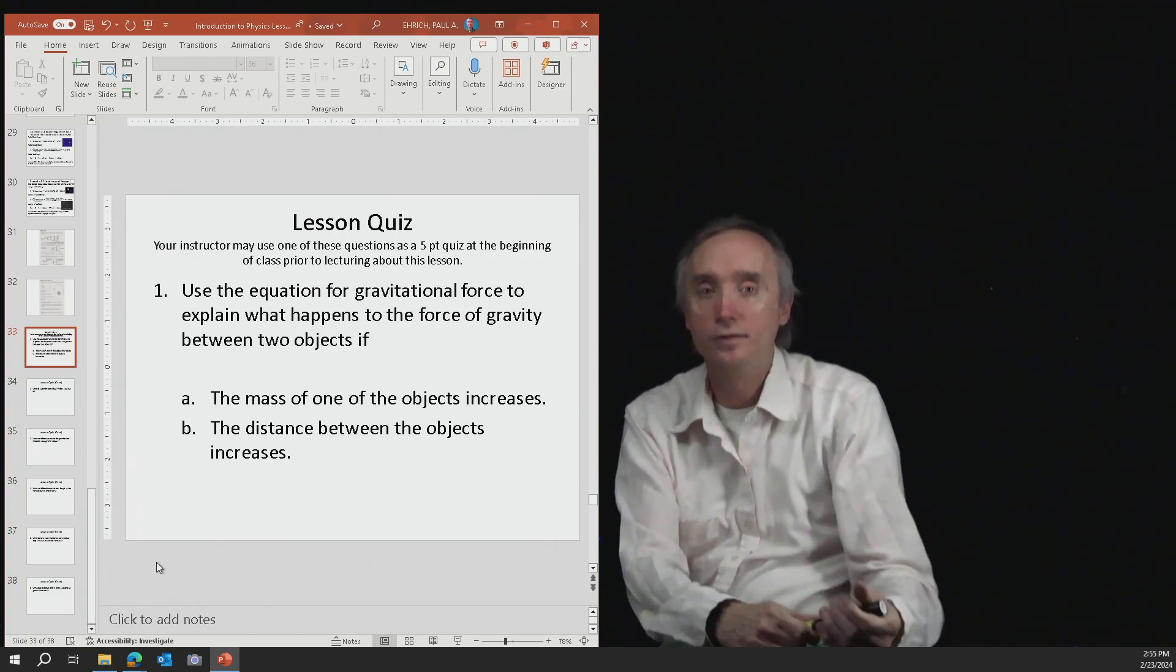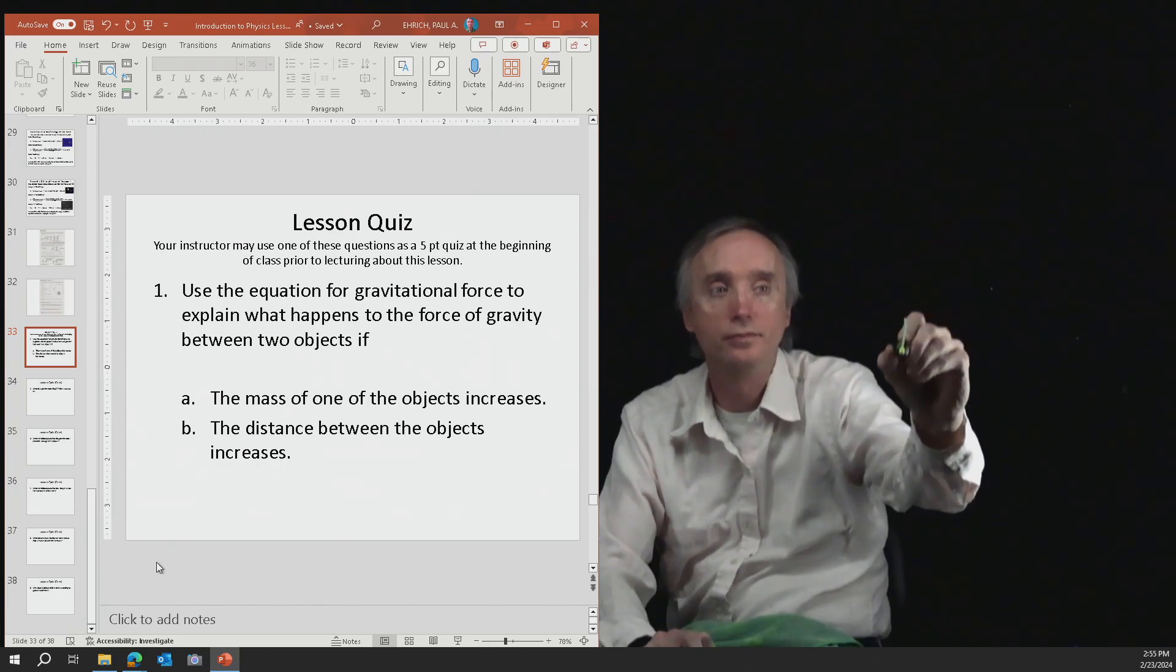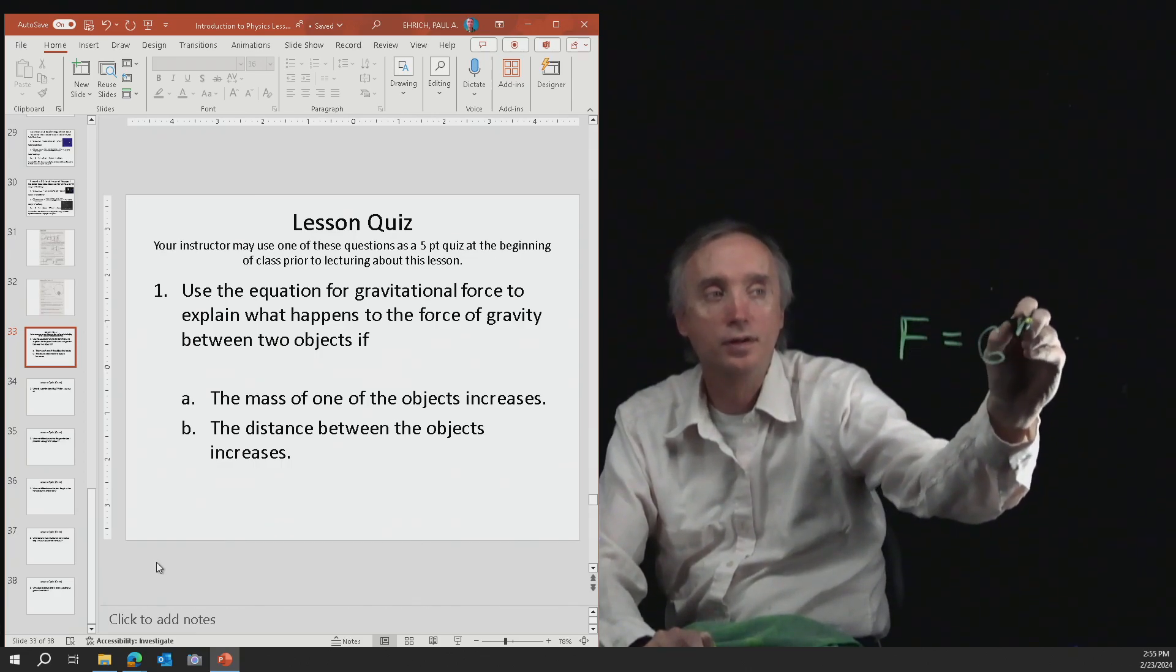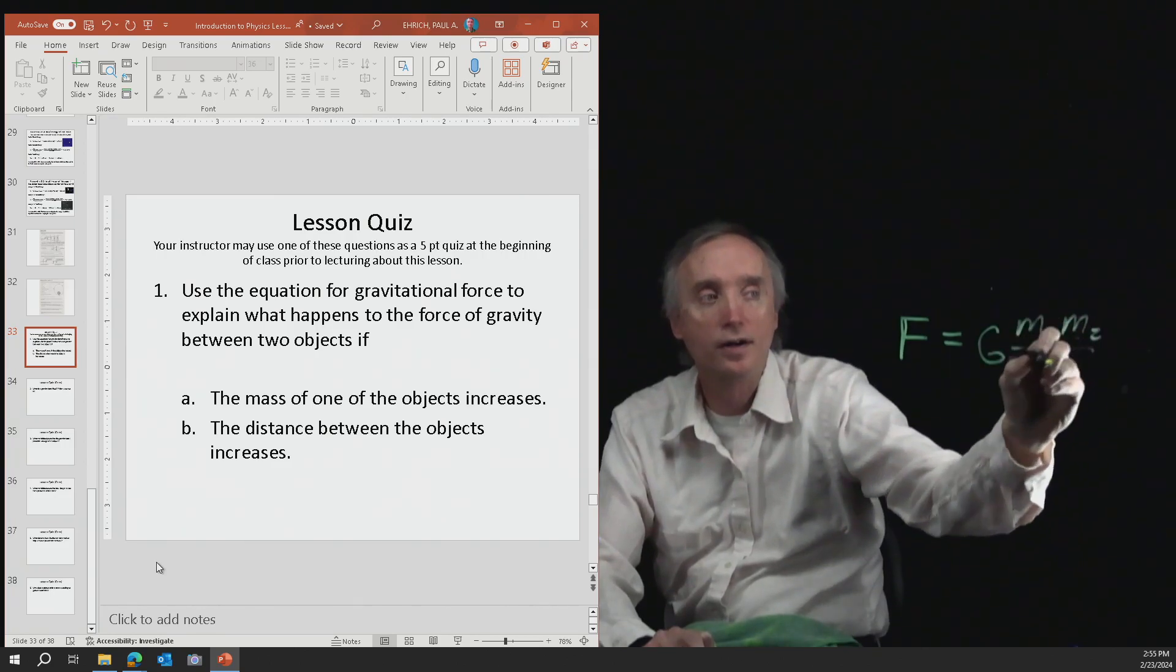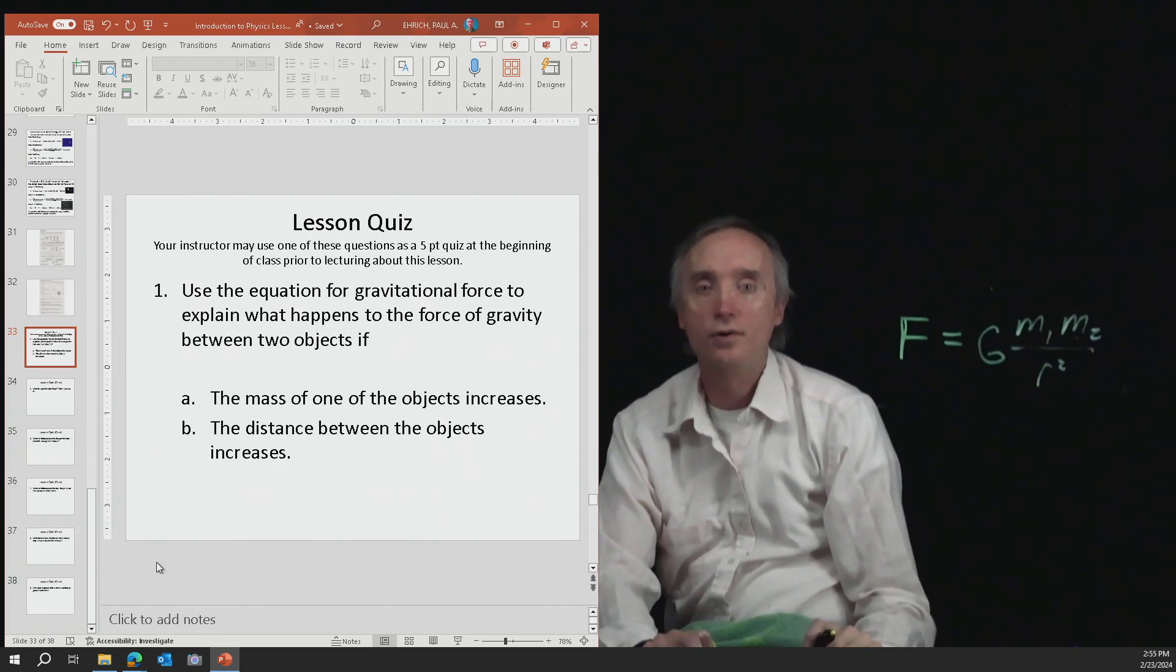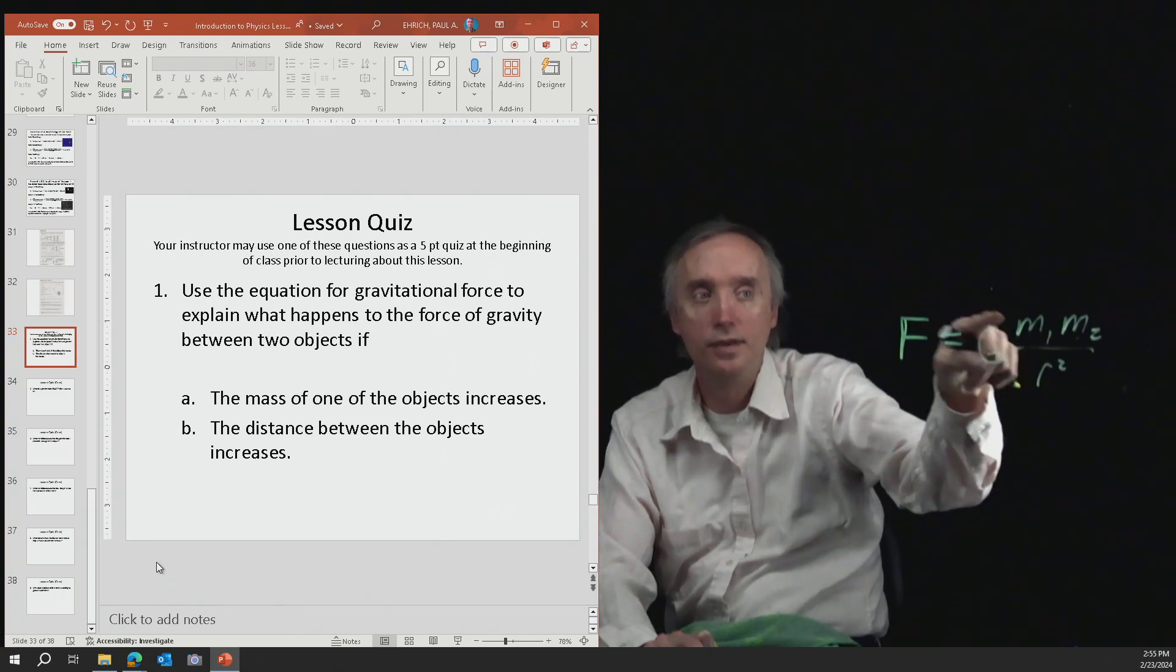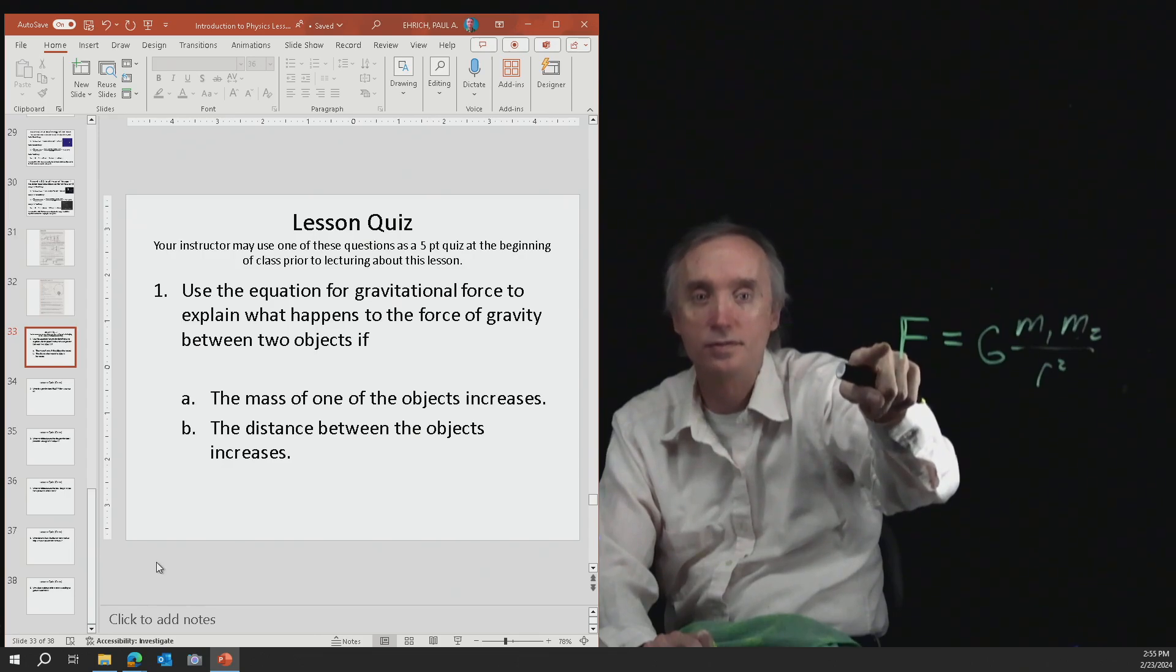So we're going to write down the force of gravity is going to be equal to big G M1 M2 divided by R squared. So if the mass of one of the objects gets bigger, then the force gets bigger.